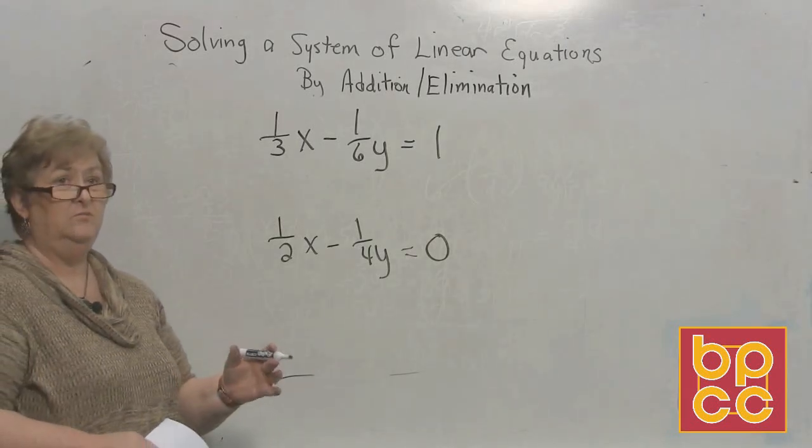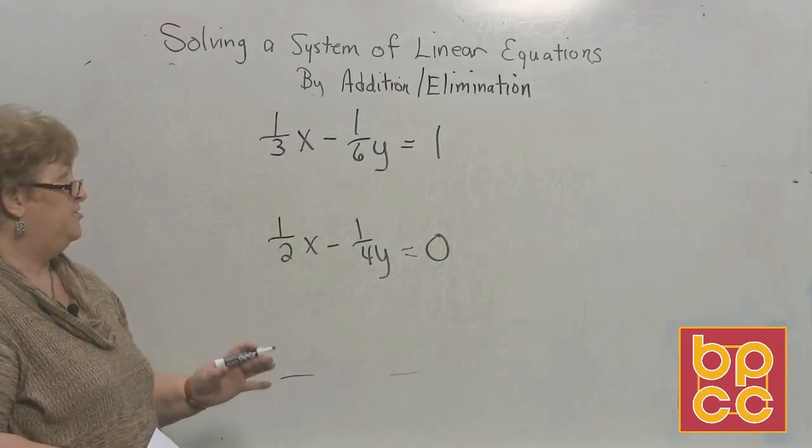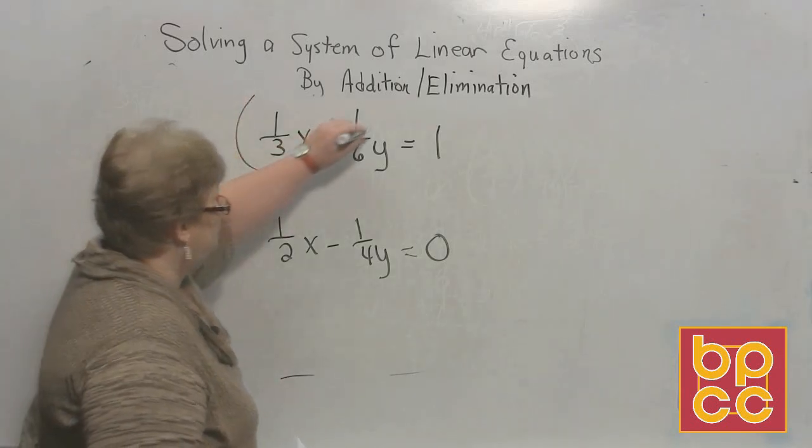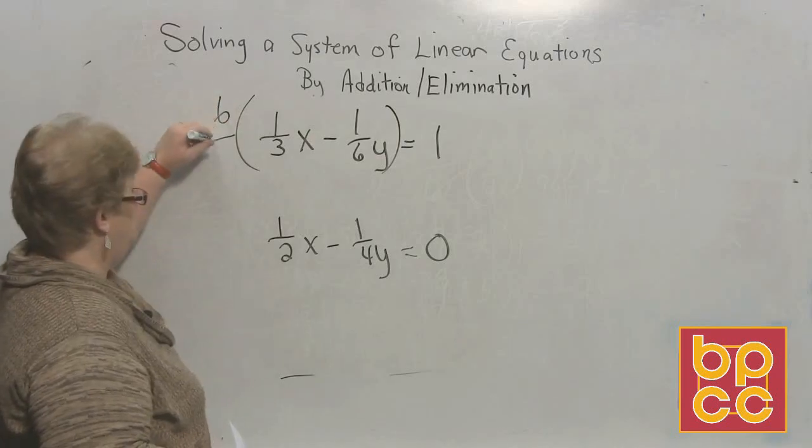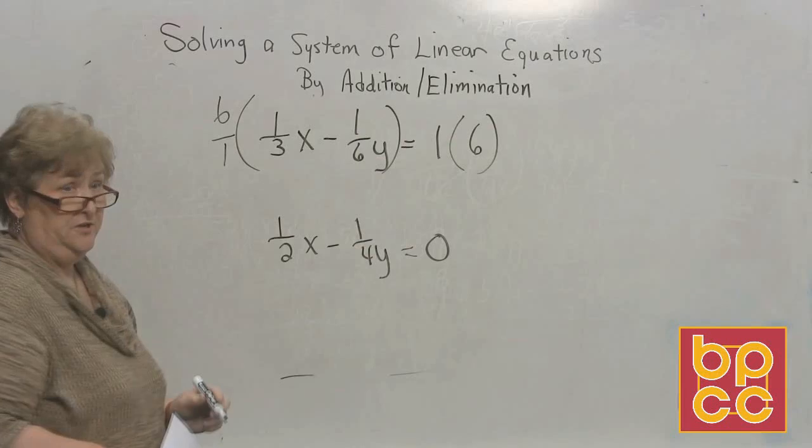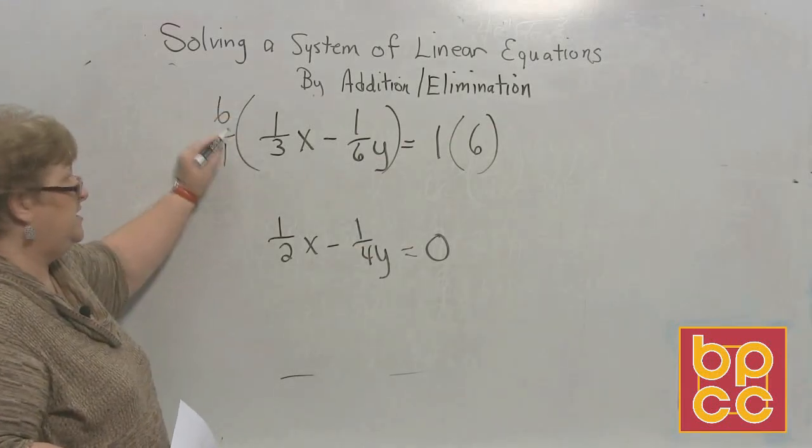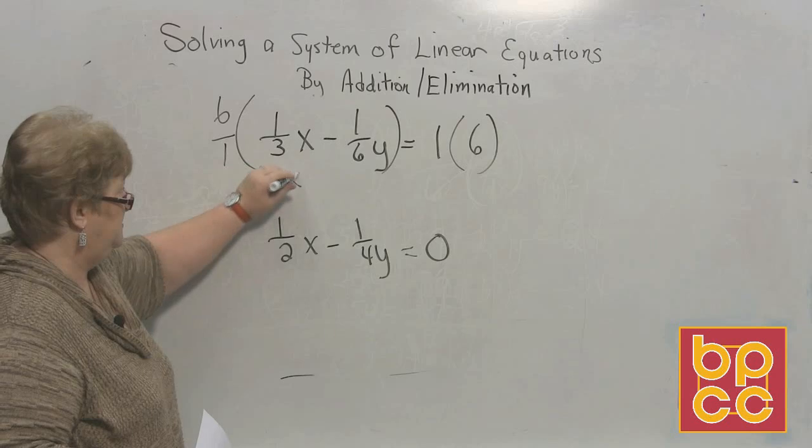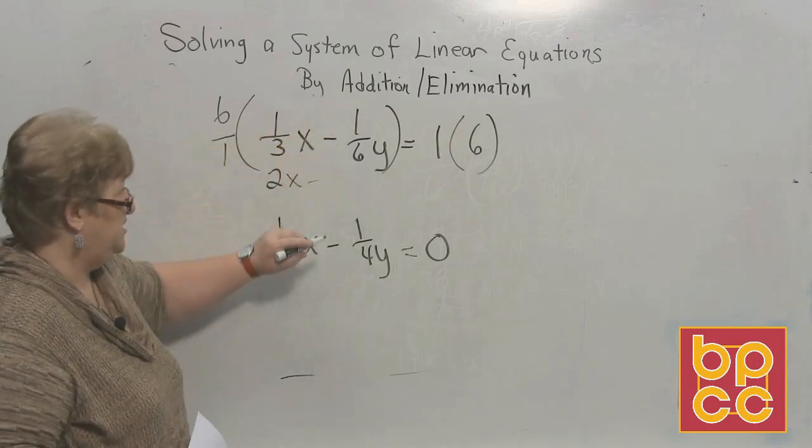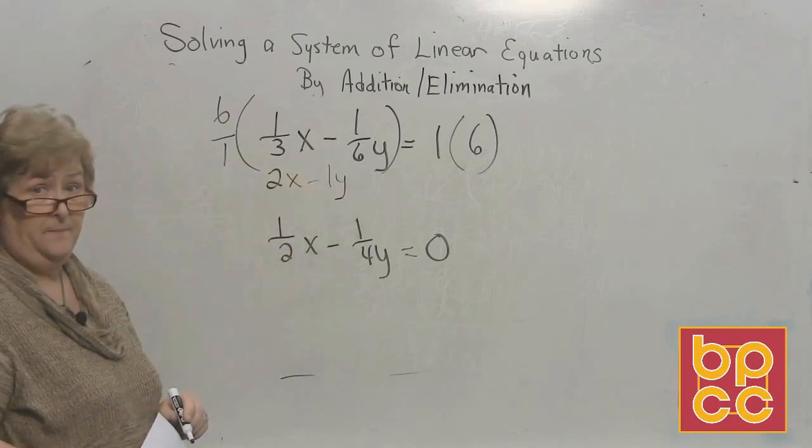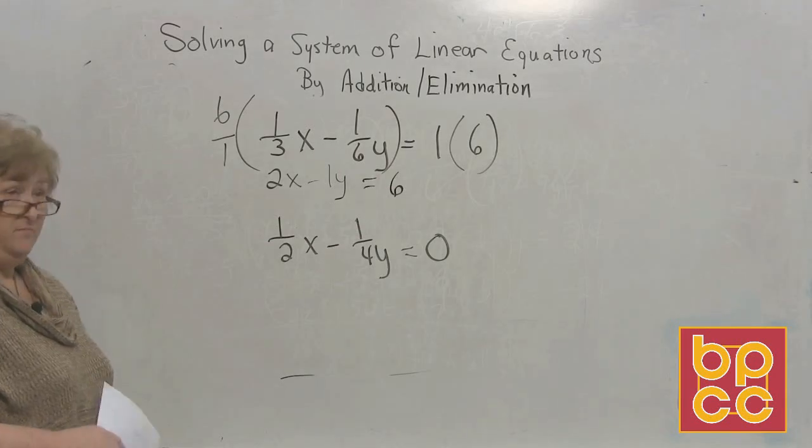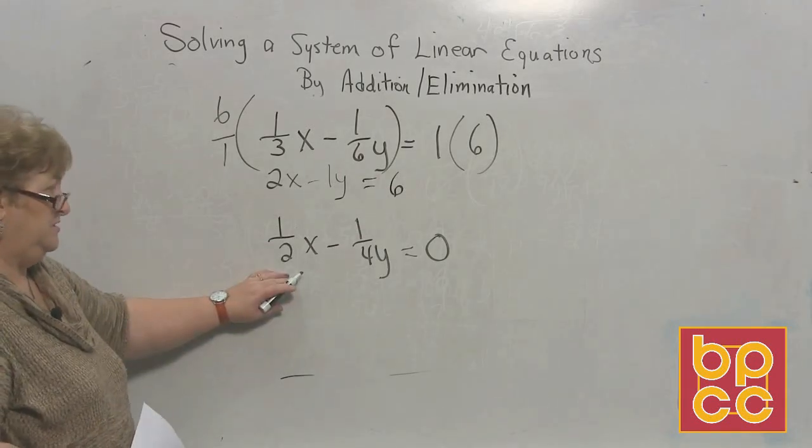Now let's turn the top number into whole numbers. We have a 3 and a 6, so the common denominator here is 6. Let us multiply both sides by 6 or 6 over 1. Now let's see what this turns into. 6 over 3, because we're multiplying, is 2x. And there's a minus sign. And 6 over 6 is 1y. And 1 times 6 is 6. So we've got whole numbers on that one.